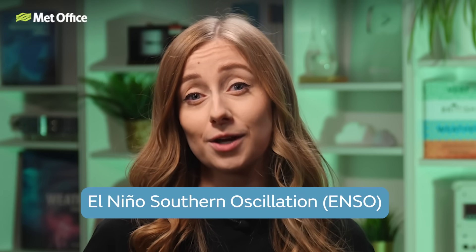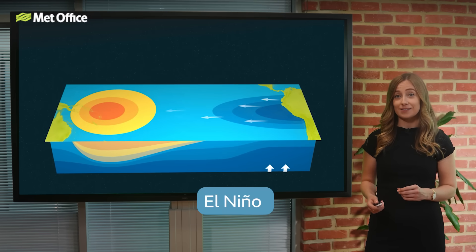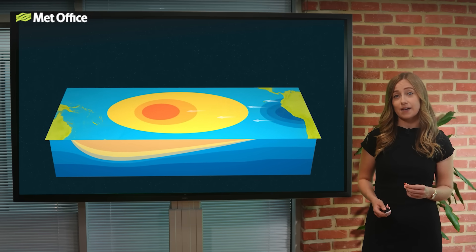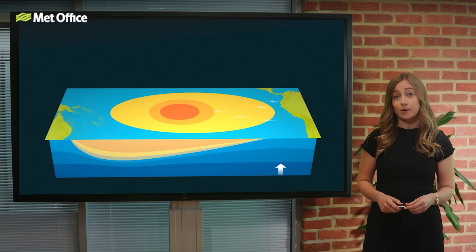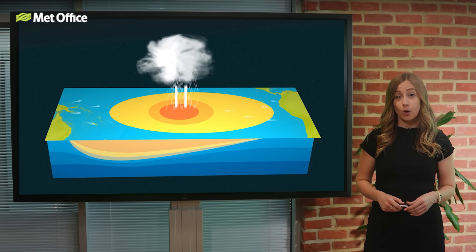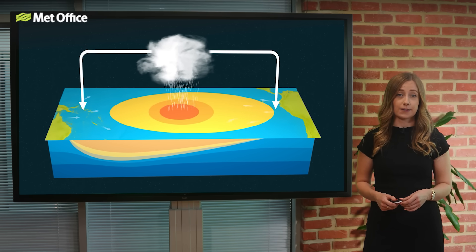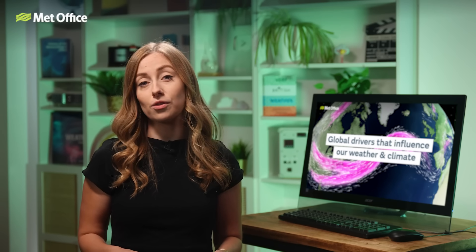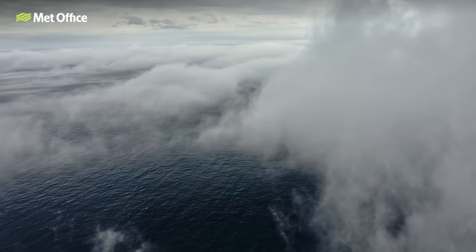El Niño and La Niña are part of a larger climate pattern known as El Niño Southern Oscillation, or ENSO. While this cycle primarily affects the tropical Pacific, its ripple effects can influence weather patterns as far away as the UK. El Niño occurs when the sea surface temperatures in the central and eastern tropical Pacific Ocean rise significantly, disrupting normal oceanic and atmospheric patterns, weakening the trade winds, and leading to a warming in the upper atmosphere. These changes shift and strengthen the subtropical jet stream, which can then influence the North Atlantic jet stream, often pushing it further north and increasing westerly winds across the Atlantic towards the UK.